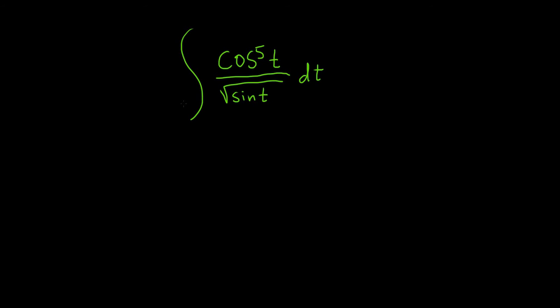Integrate cosine to the fifth power of t over the square root of sine t. Solution: So we have powers of sine and cosine, and whenever you have an odd power of a sine or a cosine, you want to save a copy of that power.